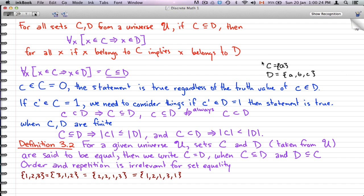So the statement is that C does not belong to C, but C belongs to D. From this example, we know that C is a subset of D because C has A and D has A. So the statement is true, regardless of the value of C belonging to D.